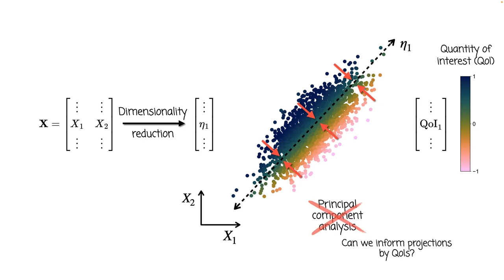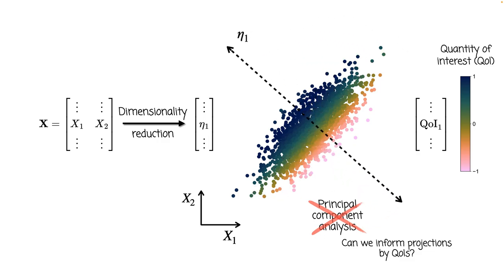So can we do better? Can we inform low-dimensional data projections by arbitrary quantities of interest, such that they are represented uniquely over the projection? And specifically, can we achieve that for QoIs that were not within the original dataset, or maybe even ones whose very definition depends on the projection operator? For this particular QoI, a much better one-dimensional subspace will be this one. After collapsing all data points onto this one-dimensional line, all pink points land on top of each other on one side, and all dark blue points land together on the other side.